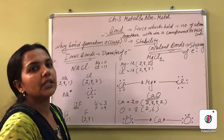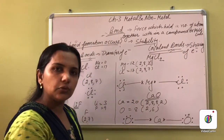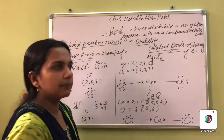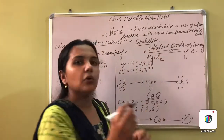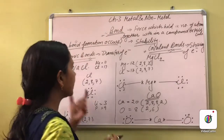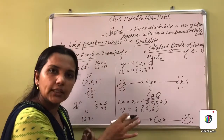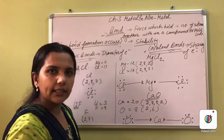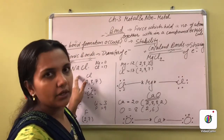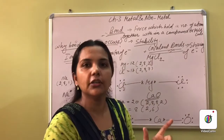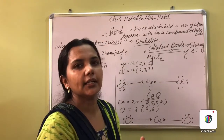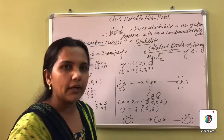Ionic bonds are those bonds which are formed by the total transfer of electrons — one atom totally donates and another totally gains. But in case of covalent bonds, only sharing of electrons takes place — no total transfer occurs. Where there is only sharing without completely giving to the other, that is said to be the covalent bond.